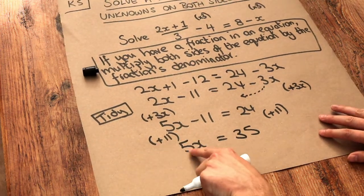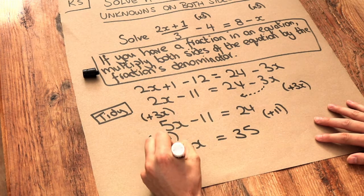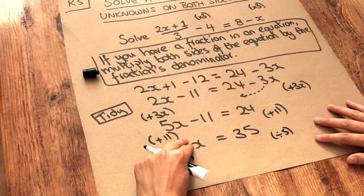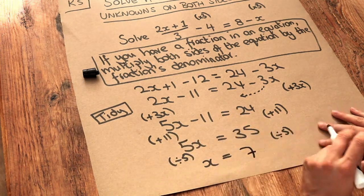Then finally, x has been multiplied by 5, we want to undo the times by 5, so we therefore divide both sides by 5. That gets rid of the times by 5, leaving just x. 35 divided by 5 is equal to 7.